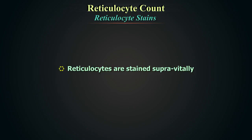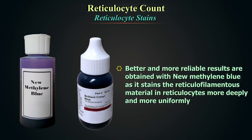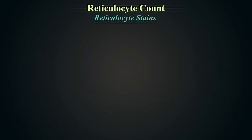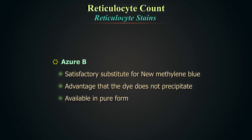Reticulocytes are stained supravitally — that means the cells are alive while being stained, so you should not stain a smeared sample. The usual stains employed are New Methylene Blue, Brilliant Cresyl Blue, and Azure B. New Methylene Blue gives better and more reliable results, staining the reticulofilamentous material more deeply and uniformly. Azure B is a satisfactory substitute for New Methylene Blue, with the advantage that the dye does not precipitate and is available in pure form.